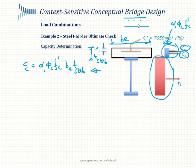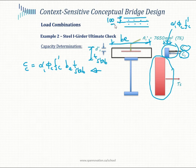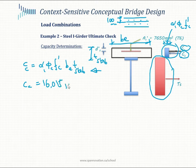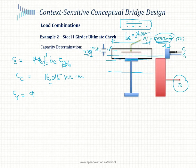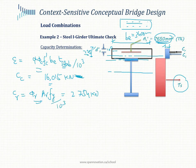The deck has two mats of rebar and the centroid of the rebar is located at d'_s = 100 mm from the top. We can now calculate Cc, which comes out to 16,015 kN — remember to divide by 10³ to get kilonewtons. The Cr value — the compression force the rebar can generate — is φr × Ar × fy, giving 2,754 kN.